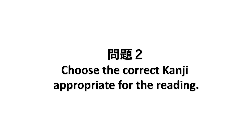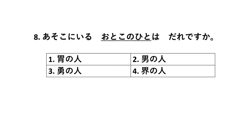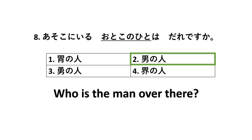Mondai Ni. In this part, we're going to choose the correct kanji appropriate for the reading — the opposite of Mondai Ichi. Number eight: Asoko ni iru otoko no hito wa dare desu ka? The correct kanji is the second option. This sentence means: who is the man over there?